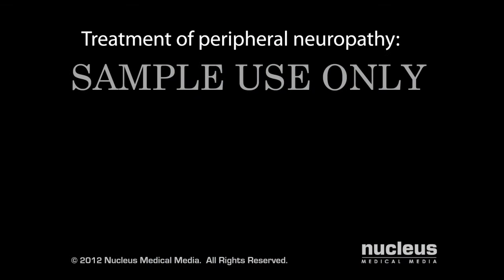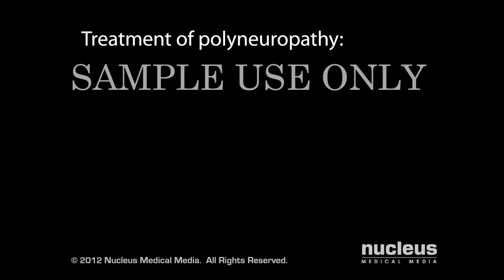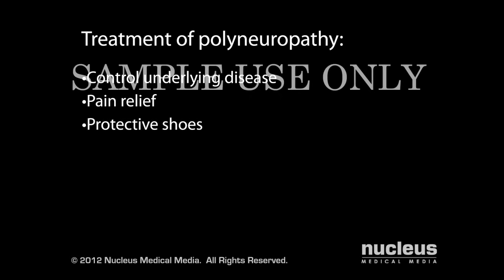Generally, treatment of peripheral neuropathy is aimed at treating the underlying cause and providing symptomatic relief. If you have mononeuropathy, you may receive pain relief medications, physical therapy to maintain muscle strength, or surgery to release compressed or entrapped nerves. If you have polyneuropathy, your doctor will treat the underlying disease to prevent further damage to the nerves, and may recommend pain medication to relieve your symptoms. If you have polyneuropathy with sensory impairment, your doctor may recommend orthopedic shoes to prevent foot injury.